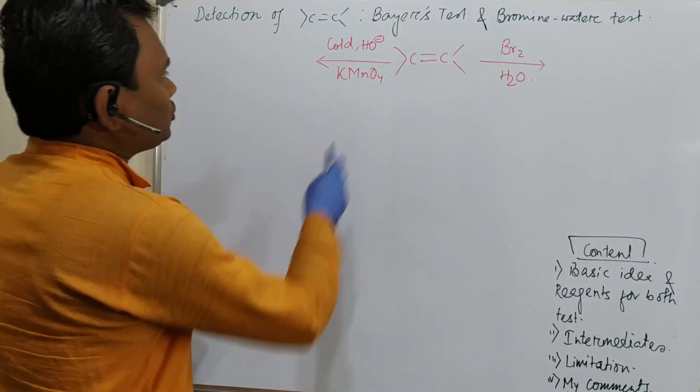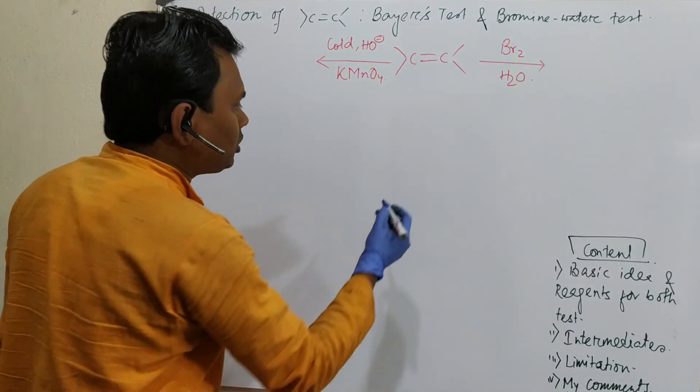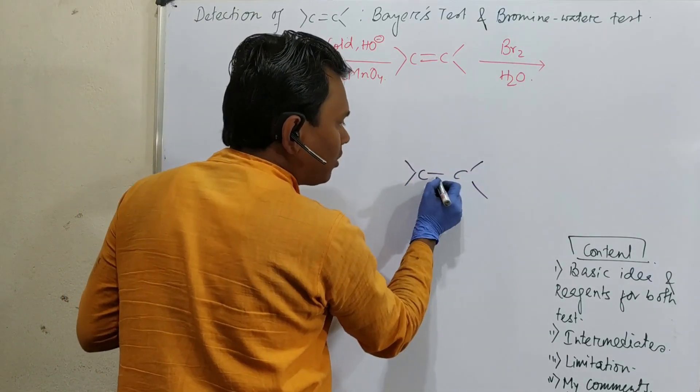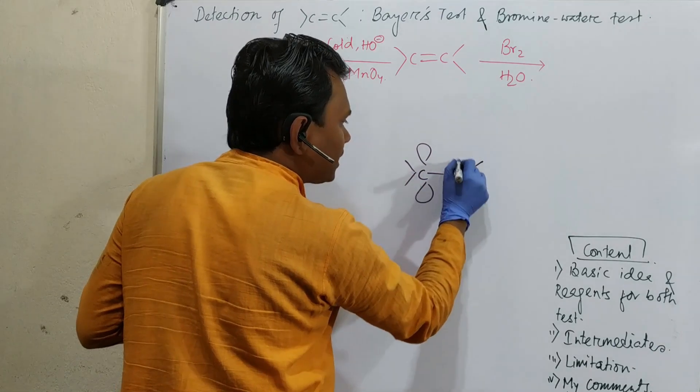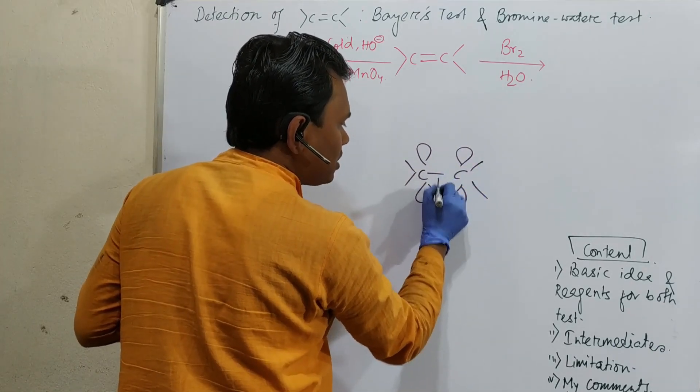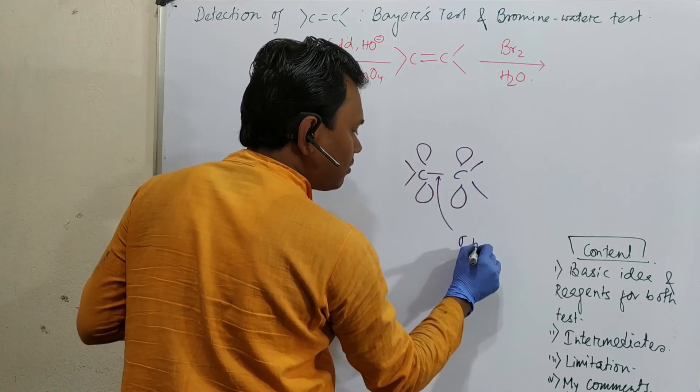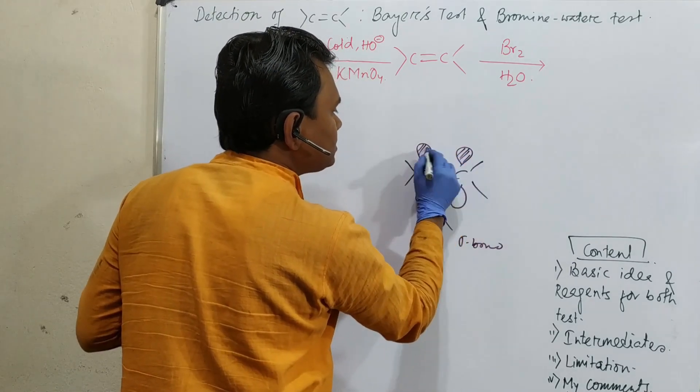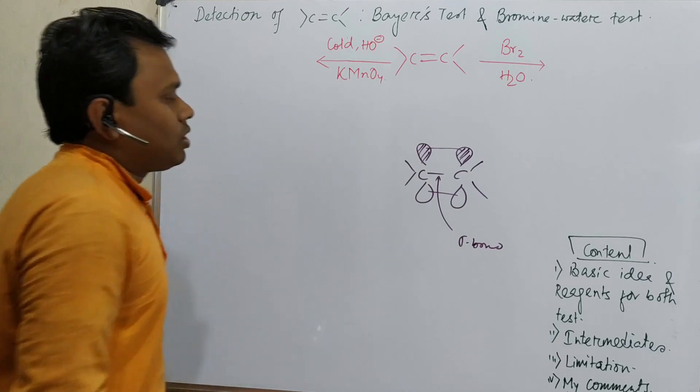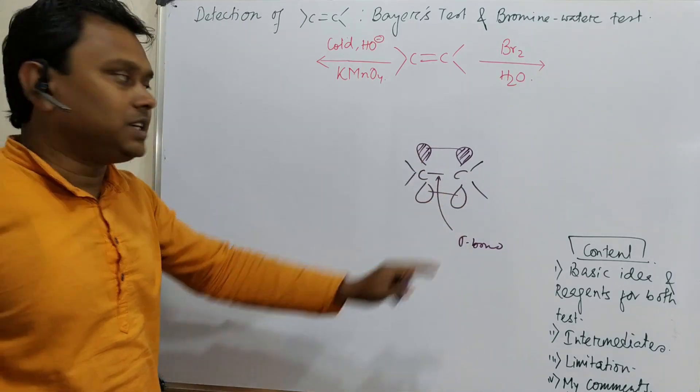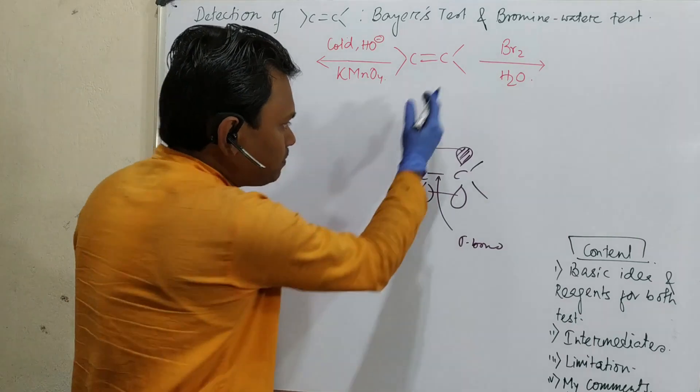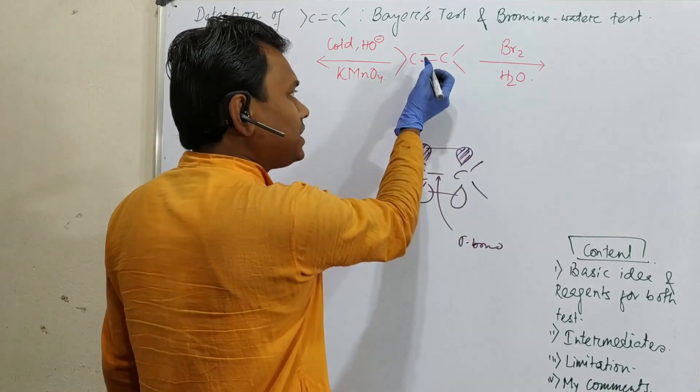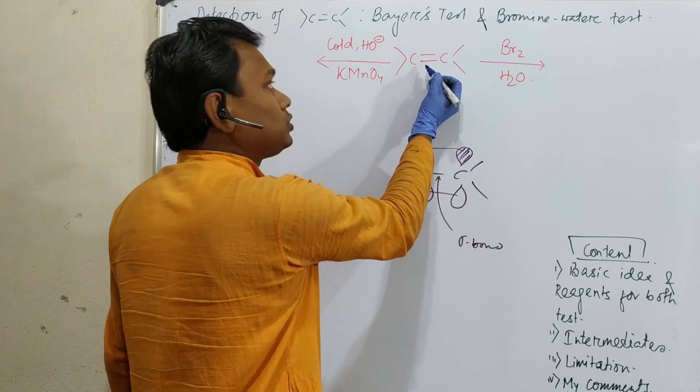As you can see, this is a C=C double bond, which means there is a sigma bond and along with that a pi bond. This is the sigma bond and this is the pi bond. This pi bond is weaker in nature because of parallel overlap or sideways overlap.